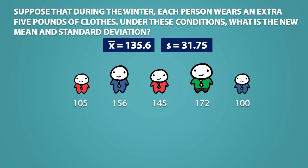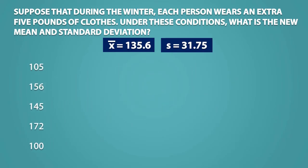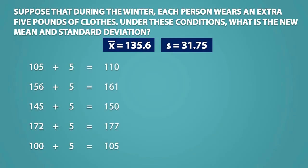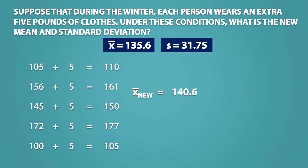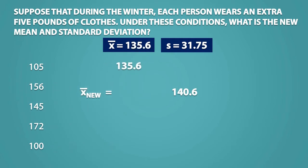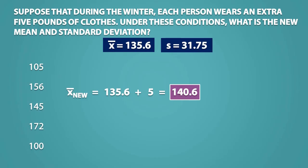Now let's see what happens to these values when we transform the data. Suppose that during the winter, each person wears an extra 5 pounds of clothes. Under these conditions, what is the new mean and standard deviation? To calculate the new mean, we can add 5 to each individual value, then calculate the new mean from this data. You should find that the new x-bar is equal to 140.6. Another way we could have calculated this is by adding 5 to the original mean, which also gives us 140.6.